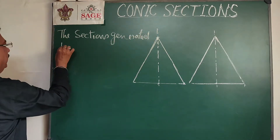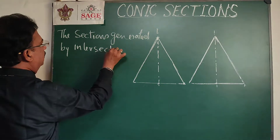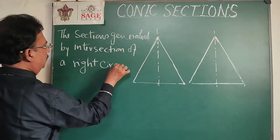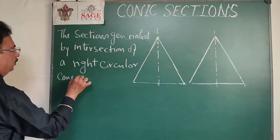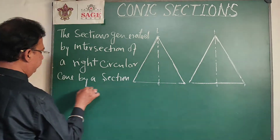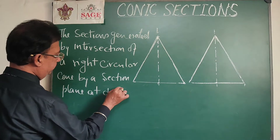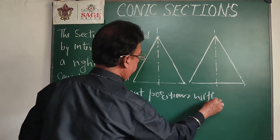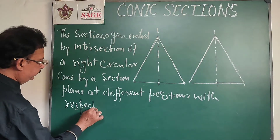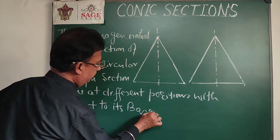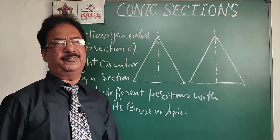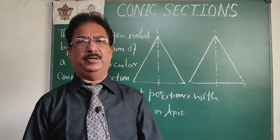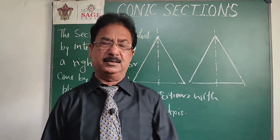Conic sections are generated by intersection of a right circular cone by a section plane at different positions with respect to its base or axis. So conic sections are the sections obtained by intersection of a right circular cone by a plane at different positions with respect to its base or axis. As you can already see, I have drawn two figures.